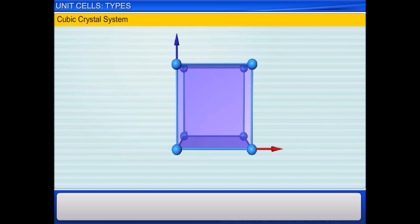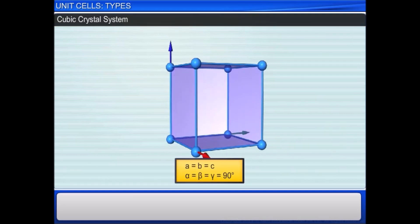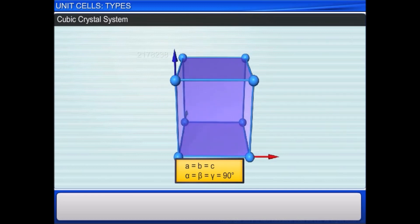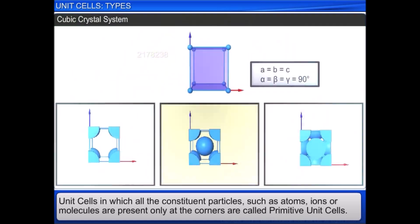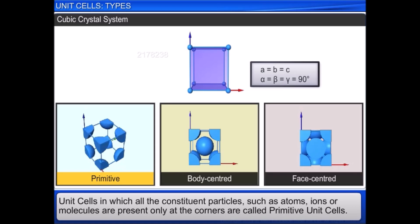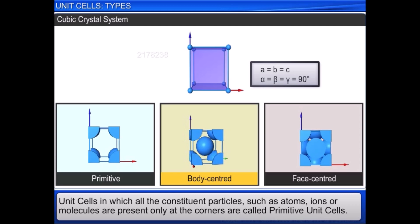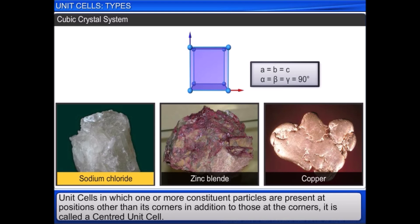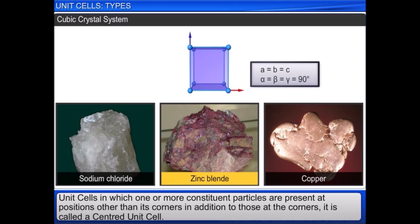In a cubic crystal system, all three axes are of equal length and are at right angles to each other. The possible lattices are primitive, body centered, and face centered, as shown here. Sodium chloride, zinc blende, and copper are well-known examples of this type.